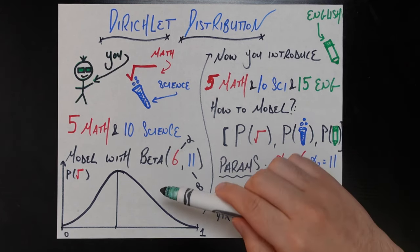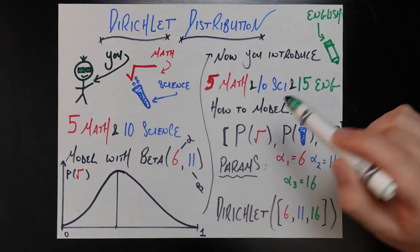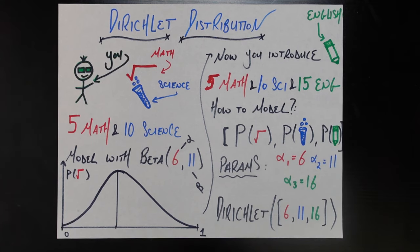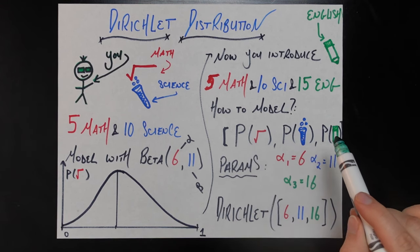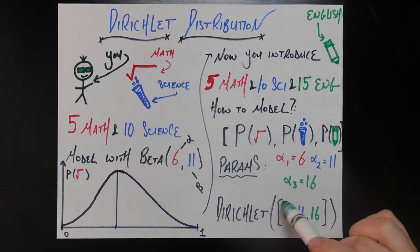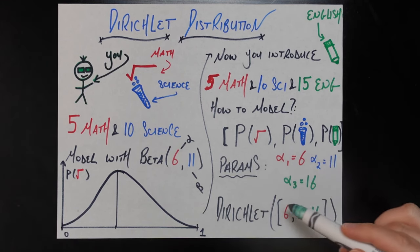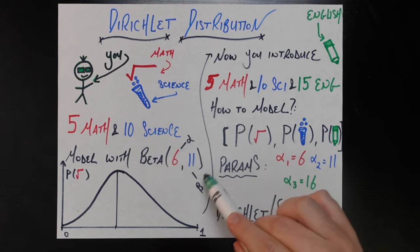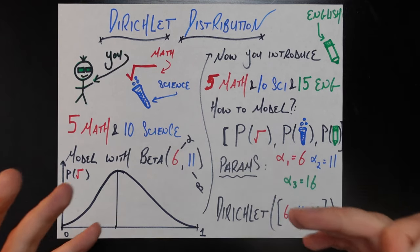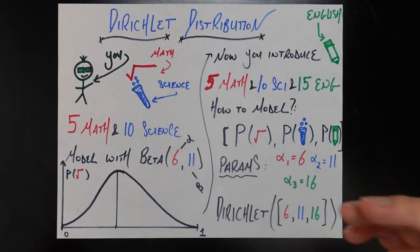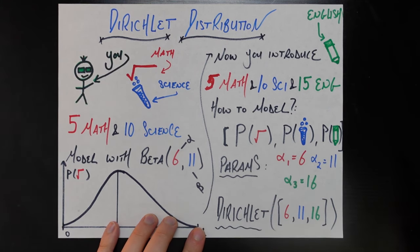Well, we can't use the beta distribution because that was fully parameterized by just the alpha and beta parameters — there are no other parameters available. So to model the probability of math, science, and English, we're going to need to introduce a third parameter, which is the number of students who are English majors plus one. This set of parameters is just like the previous set, we've just added an extra parameter to account for the English majors. And we're going to need a multivariate extension of the beta distribution — which, surprise surprise, is called the Dirichlet distribution.